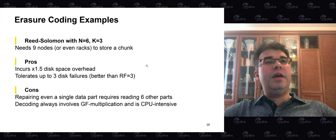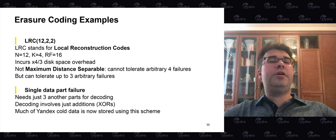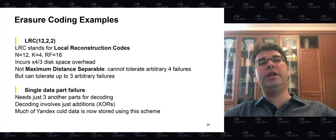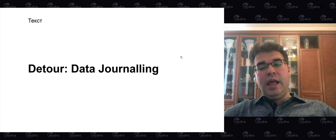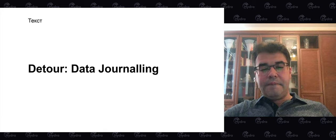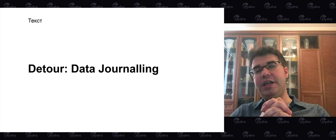There are other erasure codes worth mentioning, though I won't discuss them in detail. Local reconstruction codes can save on both IO and network bandwidth and are also used in YT. Now let's make a short detour to discuss a different storage scenario: data journaling. Blobs are immutable and fully static, with write pipelines optimized for throughput rather than latency. But YT also has key-value storages with very different priorities.